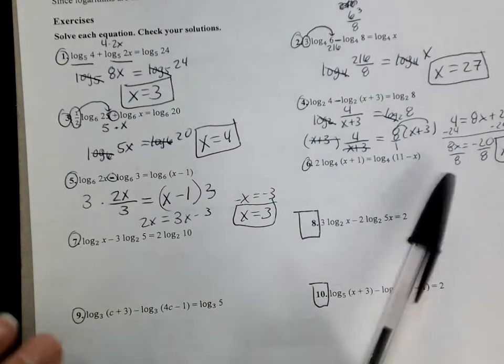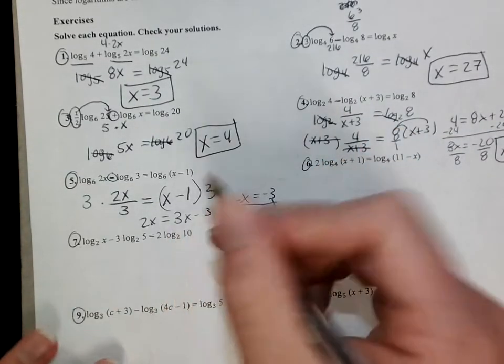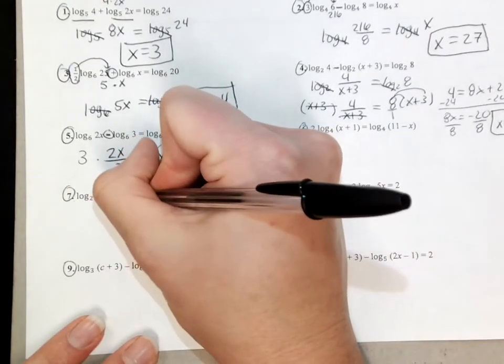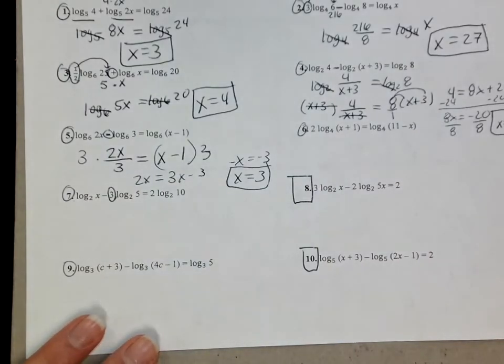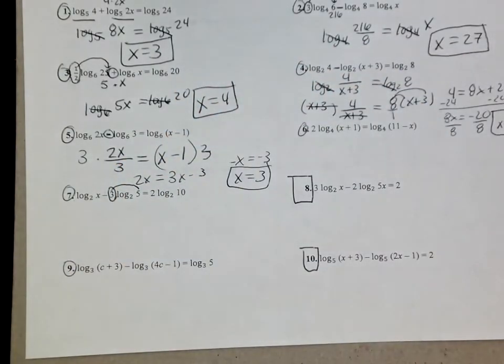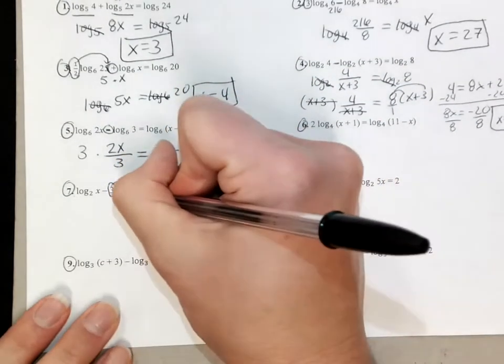This next one's a good one. I'm going to skip it for just a second. Let's do this one first. Be careful here when you have something crazy like this. Remember, this 3 becomes your exponent. That's 5³, or 125.